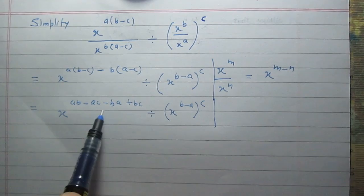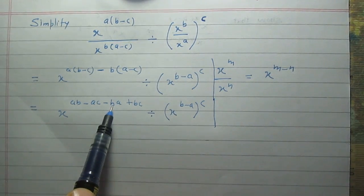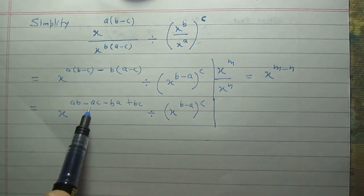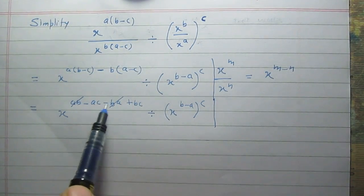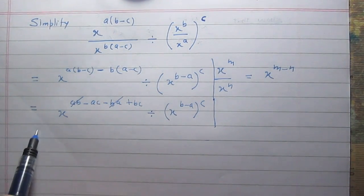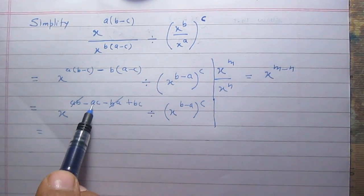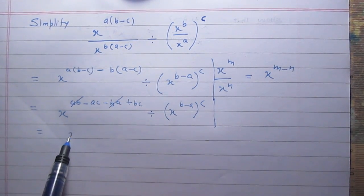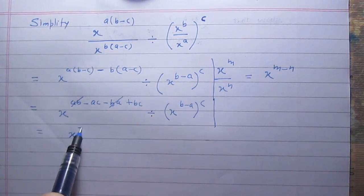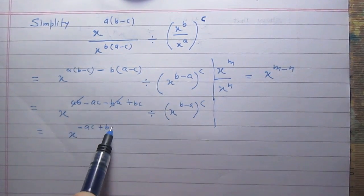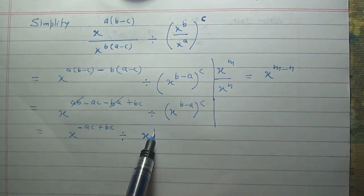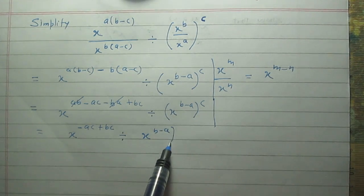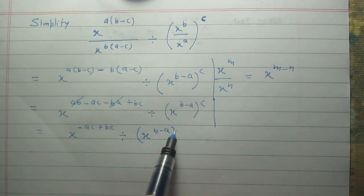Now, we see that ab and minus ba can be reduced; the result is zero. So the remaining terms are minus ac and plus bc. So it is x raised to the power minus ac plus bc, all divided by x raised to the power b minus a, whole raised to the power c.